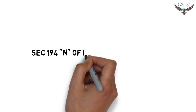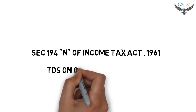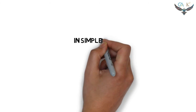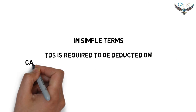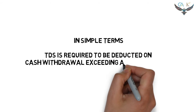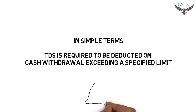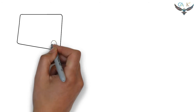In this video, we are going to study about Section 194N of the Income Tax Act — TDS on cash withdrawals. The payer is required to deduct TDS if their cash withdrawal exceeds a specified limit. Let's see who is required to deduct TDS, when it is required to be deducted, and what is the threshold limit.